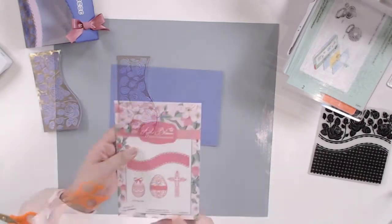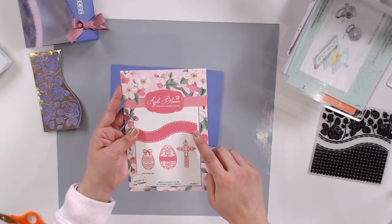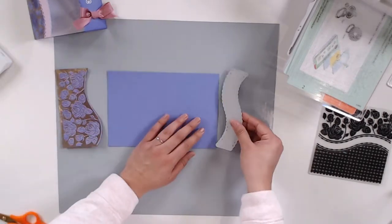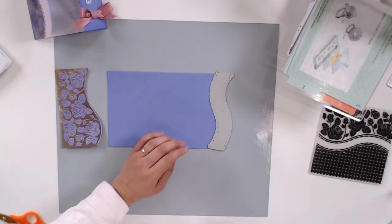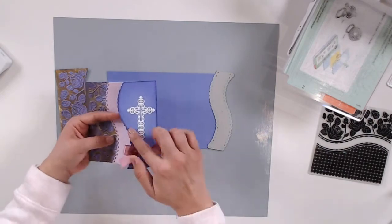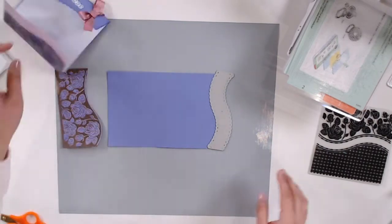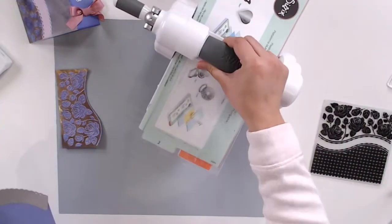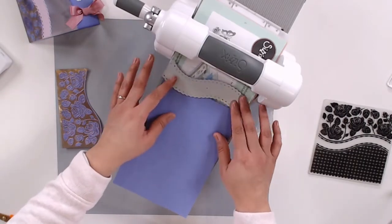Now that my embossing has cooled, I'm going to trim the roses at the wave with some scissors, and then I'm going to take the banner die from the die set in this collection to cut this piece of card at the edge to create a fun scalloped edge.